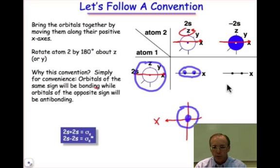For the 2s minus the 2s combination, we end up having a depletion of the wave function in between, and a change in sign.